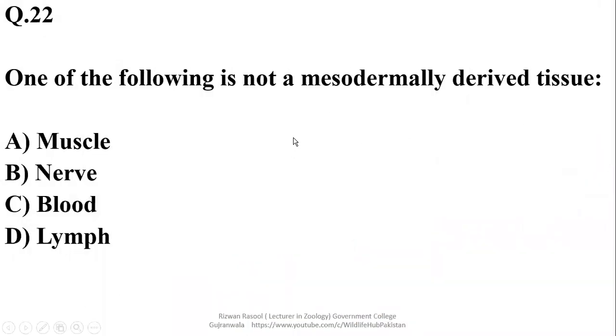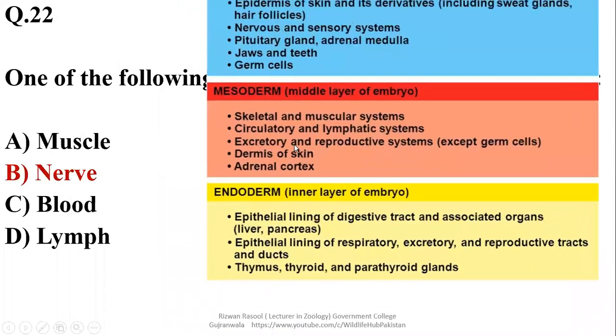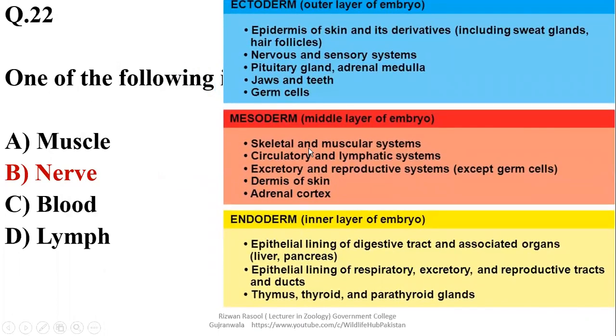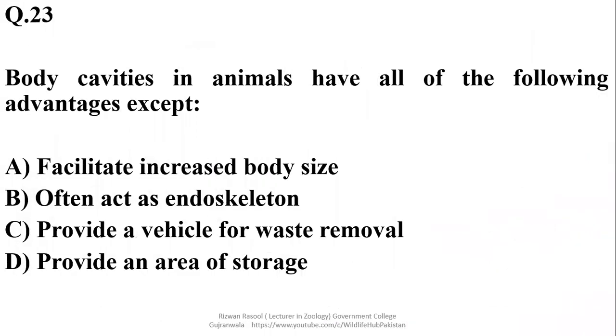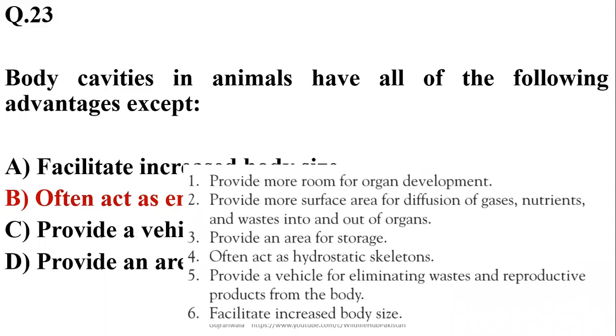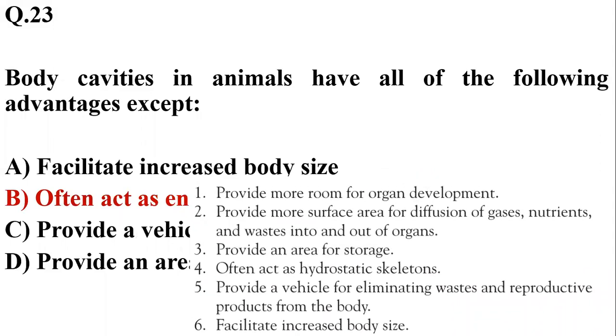One of the following is not a mesodermally derived tissue. It's nerve, muscle, blood, lymph and many of the structures they develop from mesoderm, but nerve tissue it develops from the ectoderm, so right option is beta. Body cavities in animals have all of the following advantages except: They do not act as endoskeleton, but they facilitate increased body size, provide vehicle for waste removal, as well as site of storage, so right option is beta. They may also provide more surface area, they may also act as a source of hydrostatic skeleton or removal of waste etc.